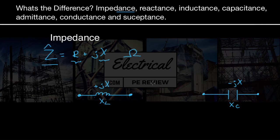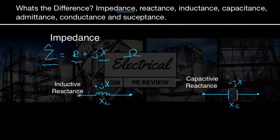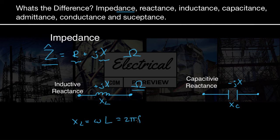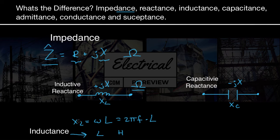Now we're at the point where we can discuss the most commonly confused terms: the difference between inductive reactance and inductance. Inductive reactance obviously comes from inductance, but the two are very different. Reactance is always in the unit of ohms, but X of L — our inductive reactance — actually comes from inductance. X of L equals ω times inductance in henries, or 2πF times L, where L is in units of henries. So L is our inductance, and we use inductance in henries to calculate inductive reactance in ohms.